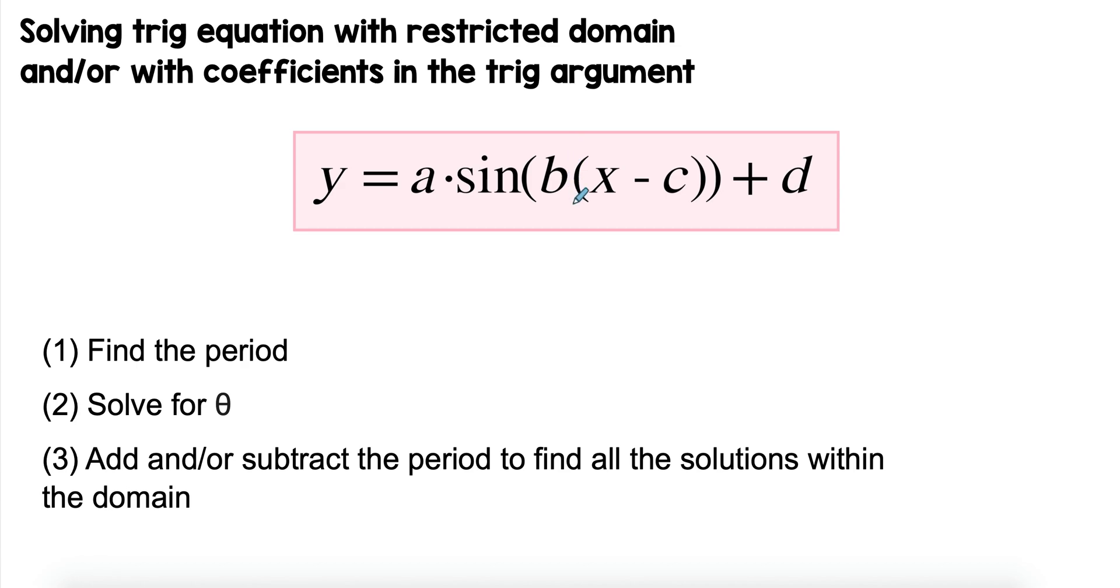What I'm interested in here is this b. This b affects your period. It tells you how often your function is going to repeat within the 360 or 2π cycle. But you need to know that b has to be factored out.